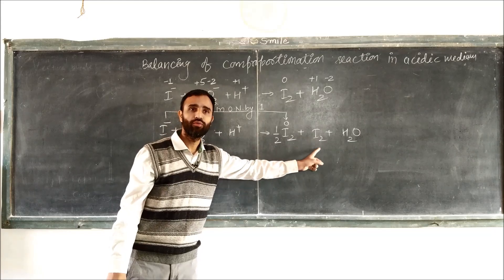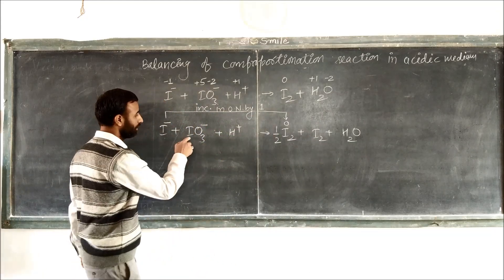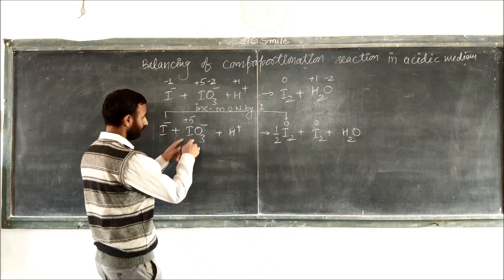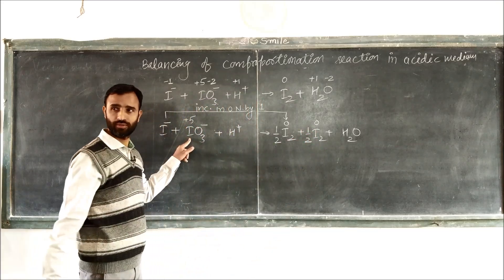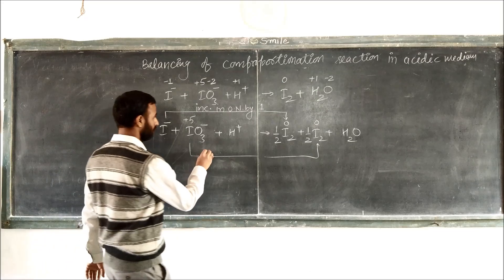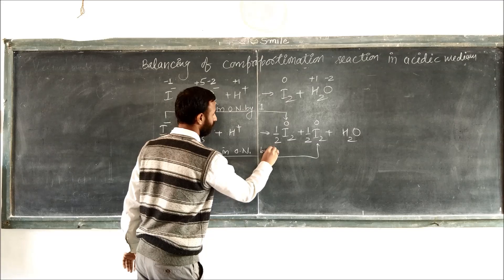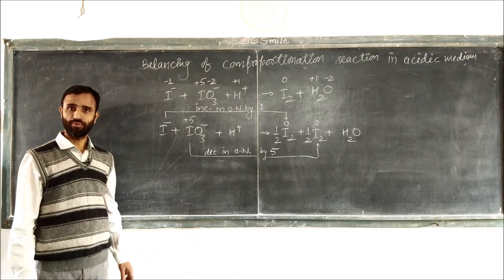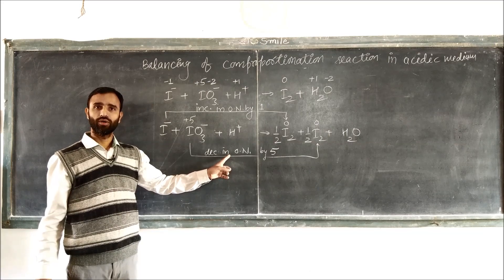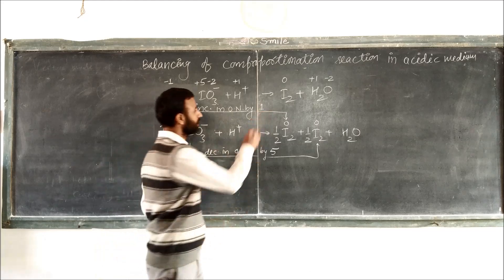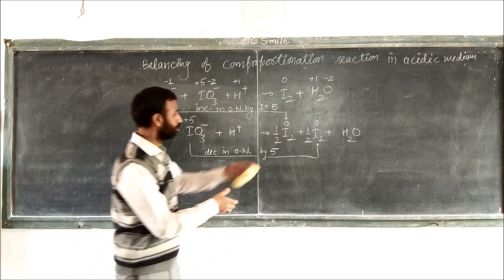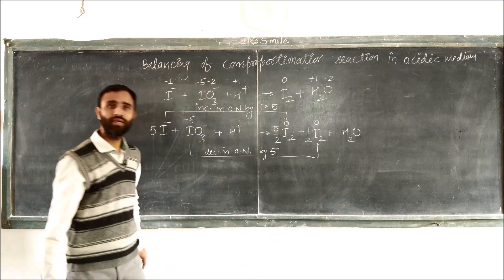Because we know these two iodines we have to add at the end. Then this iodine goes from plus 5 to 0. Again one iodine — again take it as half. So plus 5 to 0: decrease in oxidation number by 5. Total increase in oxidation number should equal total decrease. So 5 and 1 — the first equation should be multiplied by 5. That means now it is 5 and 5 by 2.